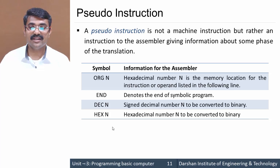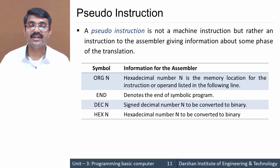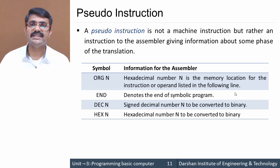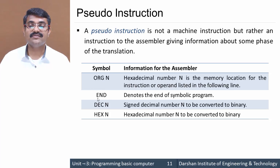These are the pseudo instructions available in our basic computer design. We have four instructions. First is ORG N — origin — where hexadecimal number N is the memory location from which our program is to be executed, indicating the start of the program. Next is END, which denotes the end of our assembly language program.